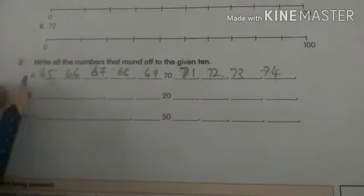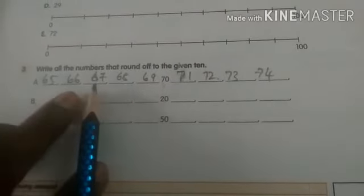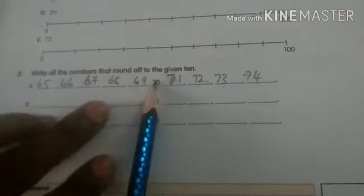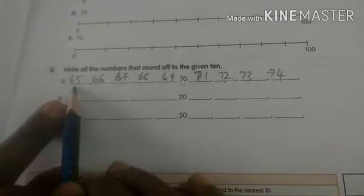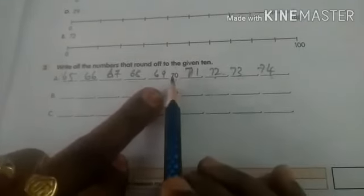Now children, we have given A1, 70. 70, 69, 68, 67, 66, 65, 70, 71, 72, 73, 74 also is nearest to 70 children. In same way do this B and C children. Thank you.